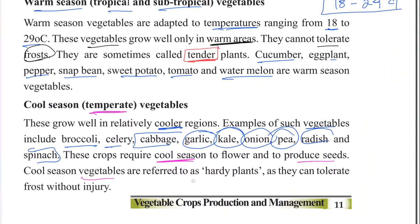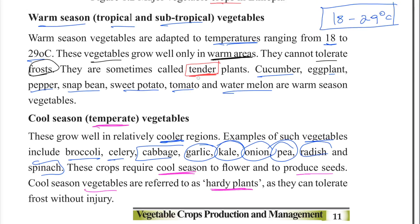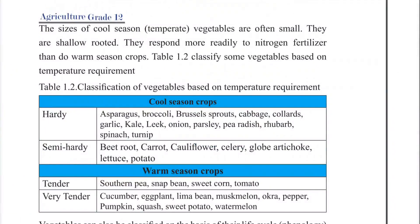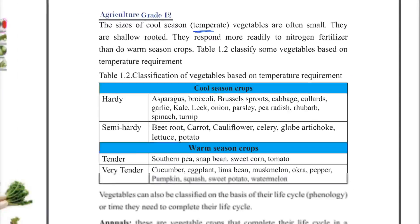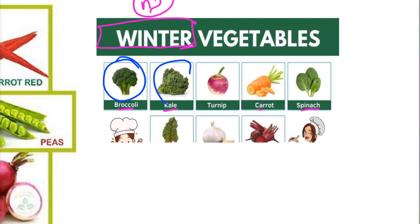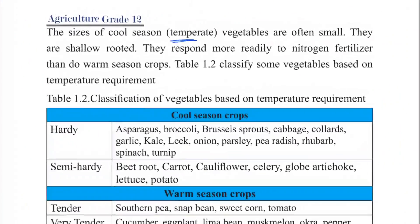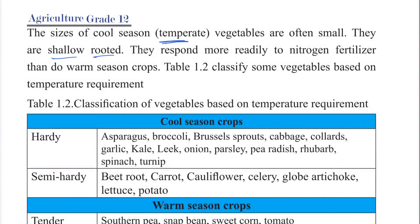Cool season vegetables are referred to as hardy plants, as they can tolerate frost without injury. The sizes of cool season or temperate vegetables are often small and shallow-rooted. They respond more readily to nitrogen fertilizers than warm season crops.